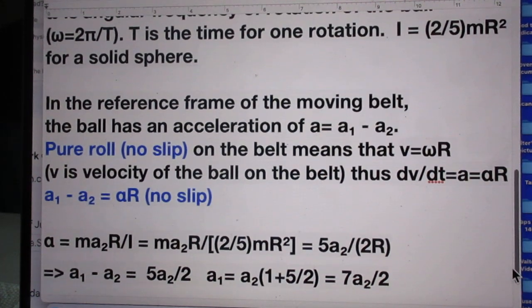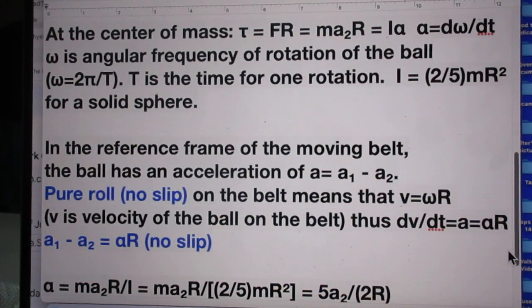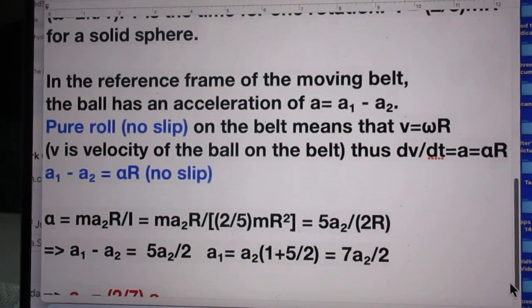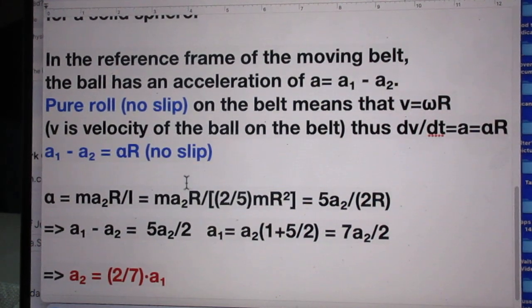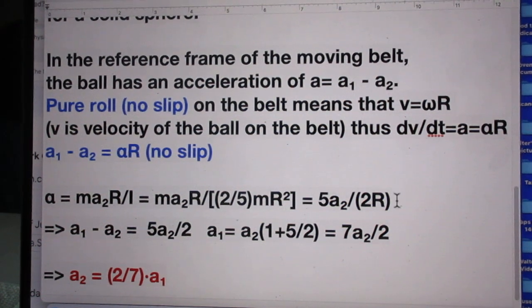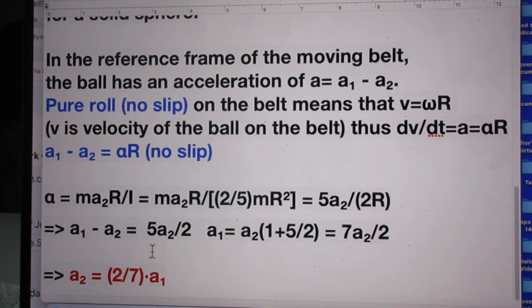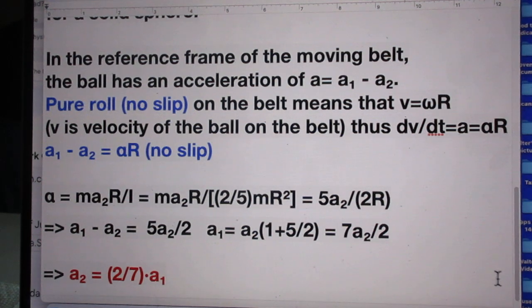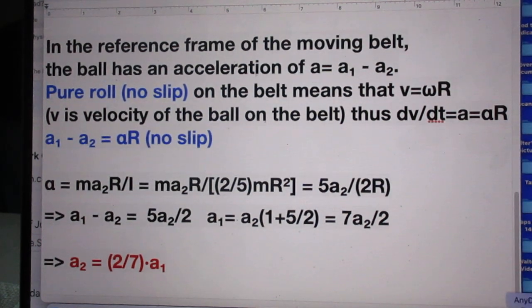Alpha is MA2 times R divided by I. You are now within spitting distance of the answer, because you put in I that we just derived, or we just know, I is (2/5)MR². You massage that a little bit further, and then you find A1 minus A2, which is αR. And then you find this, and then you find this, high school algebra.